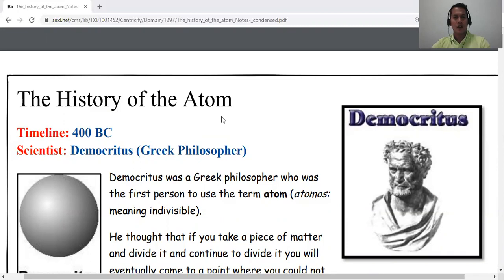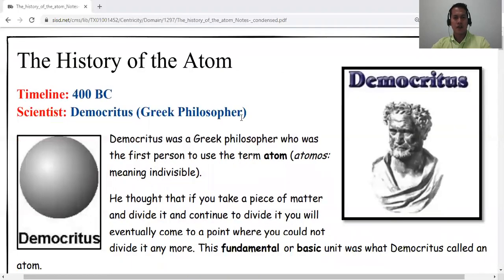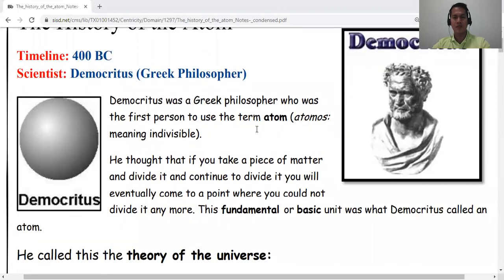So let's begin with Democritus. The timeline is 400 BC. Let's talk about his contribution in the field of chemistry. Although Democritus is not a scientist, he is a Greek philosopher. We already know that a philosopher reasons instead of doing experiments. He coined atom as atomos or indivisible.